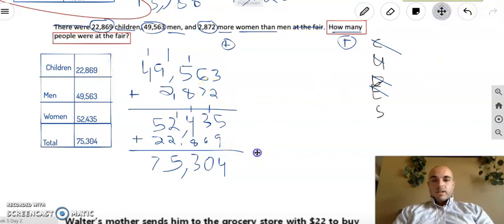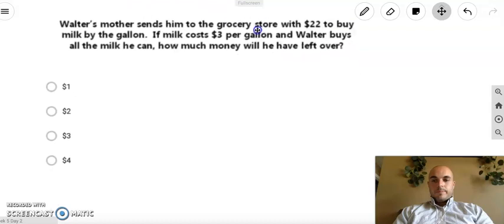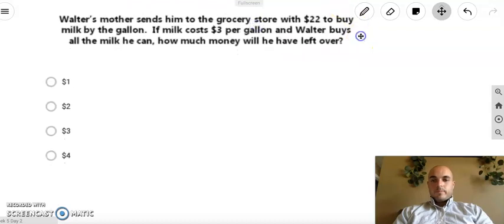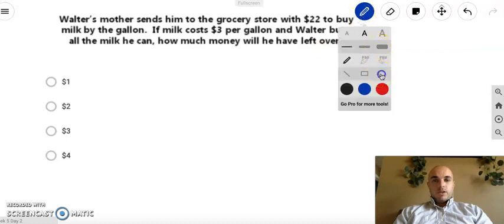Awesome. OK. Let's move on down to the next one. Now this is an example from our assessment. So as always if you've thought along this far, you'll have this example to work with. So Walter's mother sends him to the grocery store with $22 to buy milk by the gallon. If milk costs $3 per gallon and Walter buys all the milk he can, how much money will he have left over? Alright.